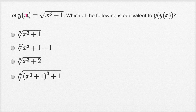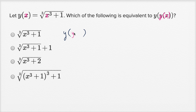So we know that y of x is equal to the cube root of x to the third plus one. Which of the following is equivalent to y of y of x? Well, to evaluate y of y of x, everywhere we would see an x here, we would just replace it with a y of x. It might seem a little bit daunting because it's referring to itself, but it should all make sense in the end.